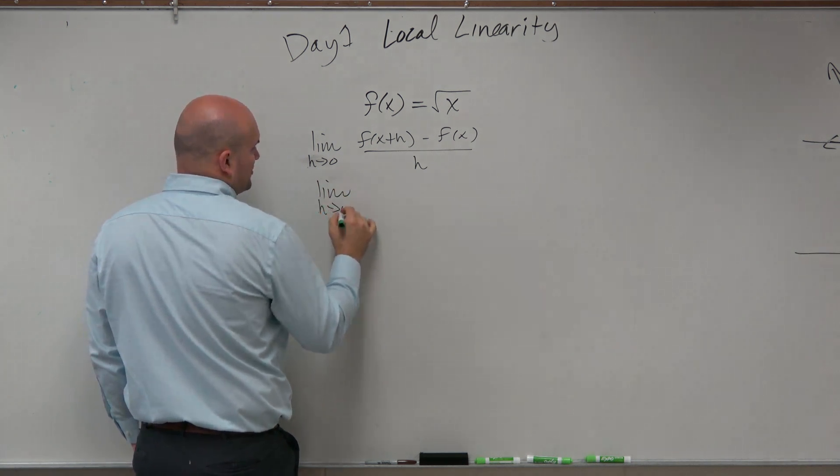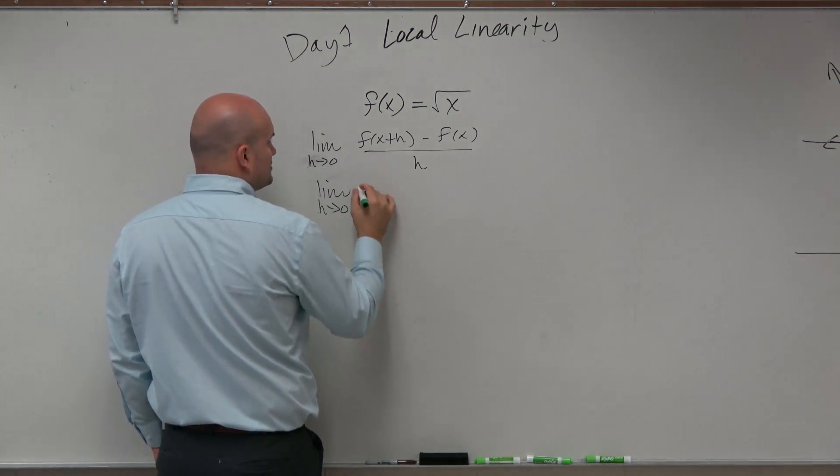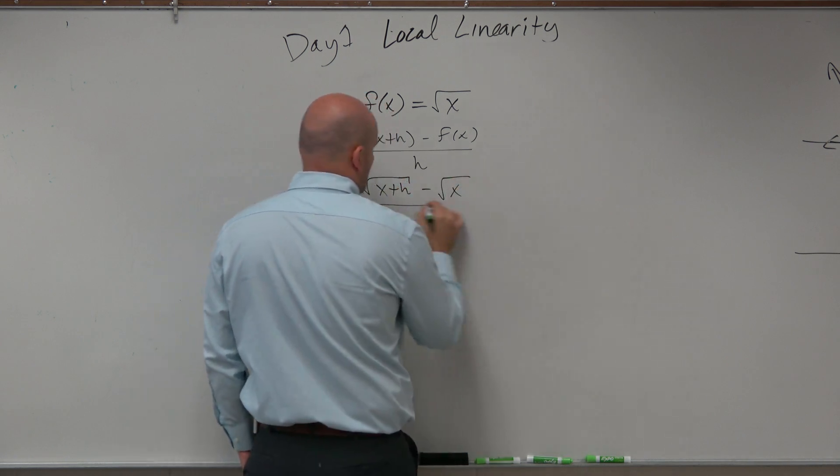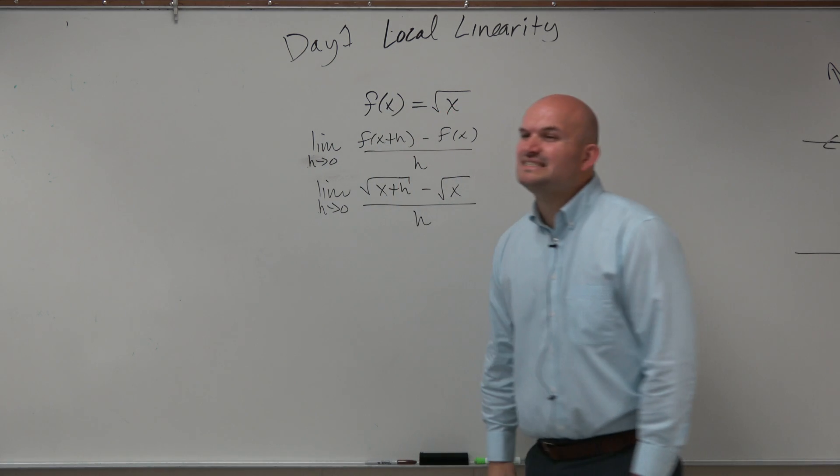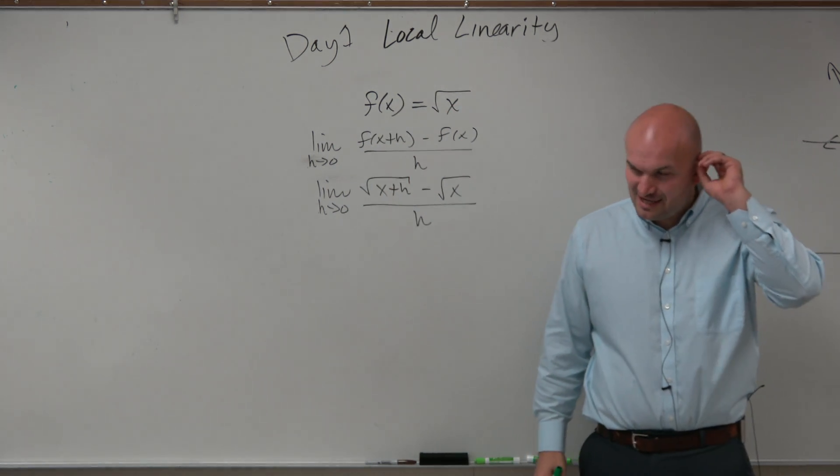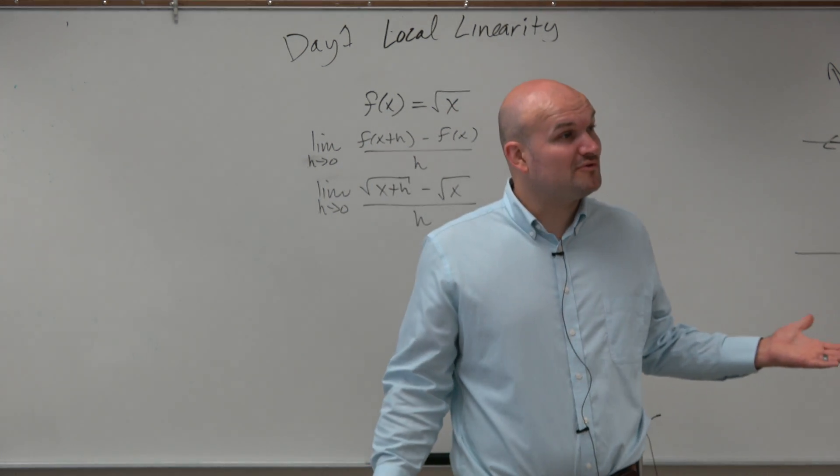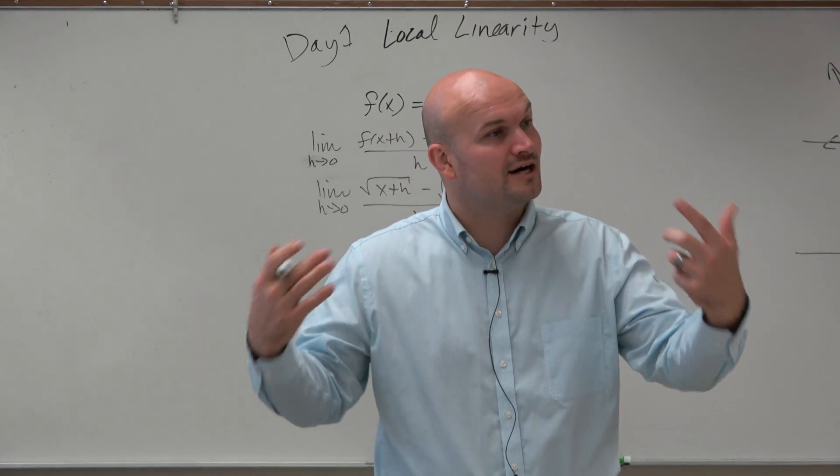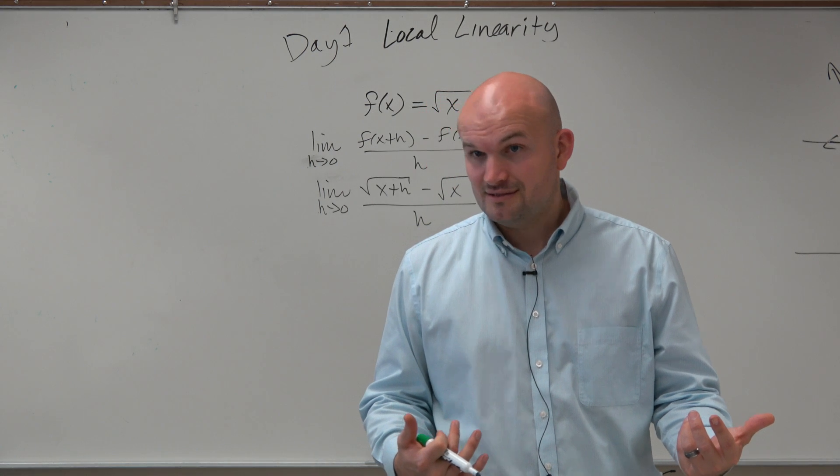Limit as h approaches 0 of square root of x plus h minus square root of x all over h. Oh, radicals. I hate radicals. But that's OK because we remember from limits, when we have our radicals, we can get rid of our radicals by rationalizing the root. Correct?